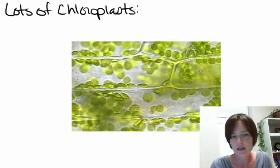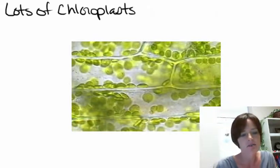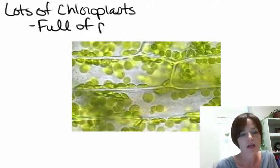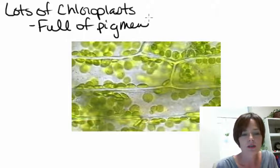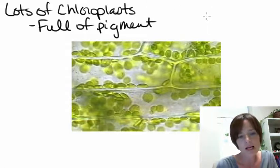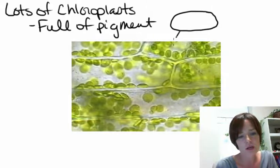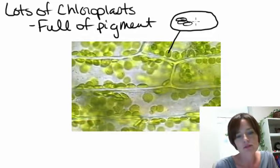The other reason that they're easy to see is because they are packed full of pigments. Here we're seeing the whole chloroplast, which would represent just one of these. And then inside of that, we're going to have a lot of individual discs, which are called thylakoids.